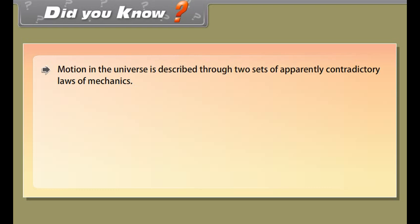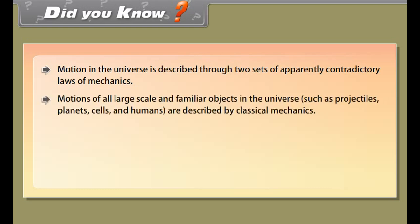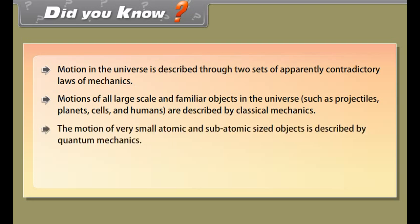Did you know? Motion in the universe is described through two sets of apparently contradictory laws of mechanics. The motions of all large-scale and familiar objects — such as projectiles, planets, cells, and humans — are described by classical mechanics. The motion of very small atomic and sub-atomic sized objects is described by quantum mechanics.